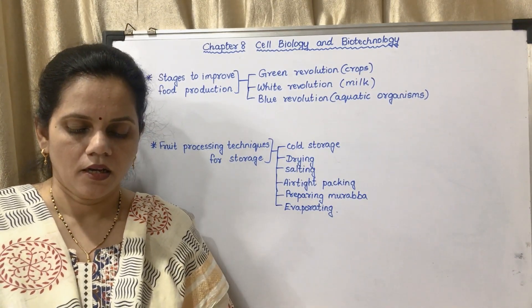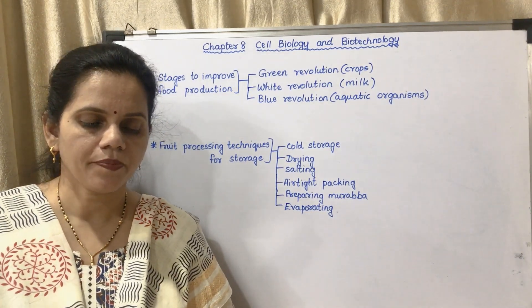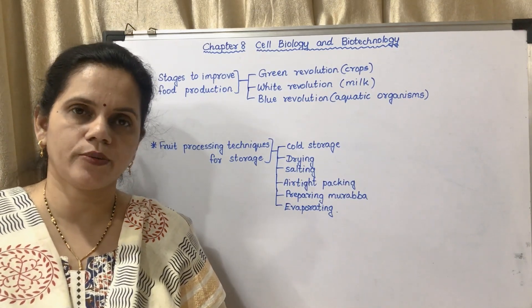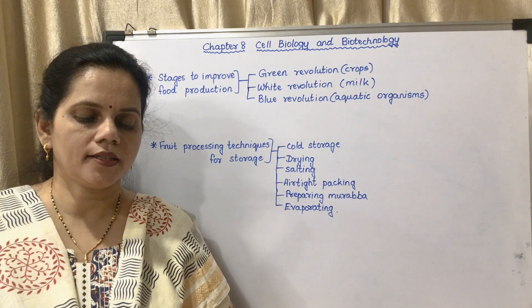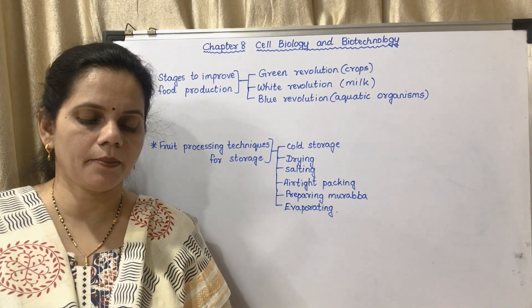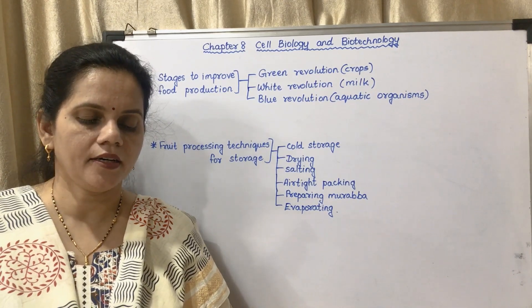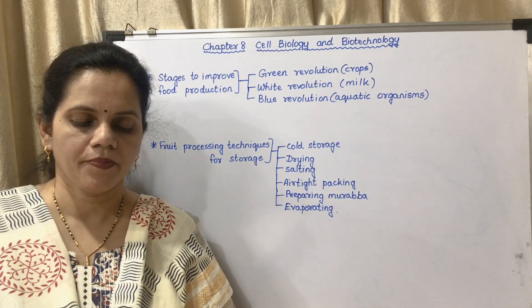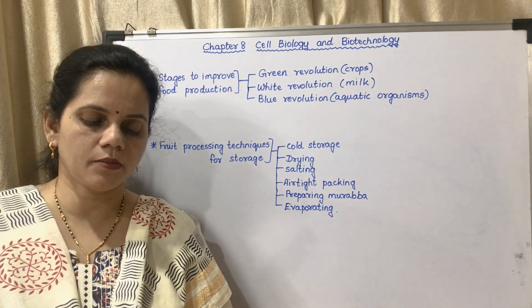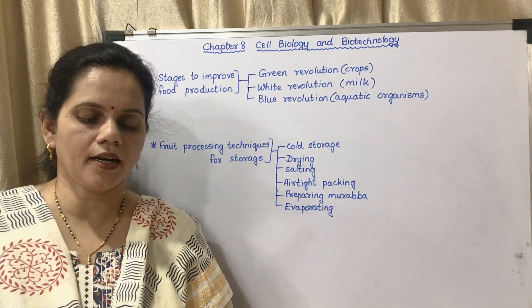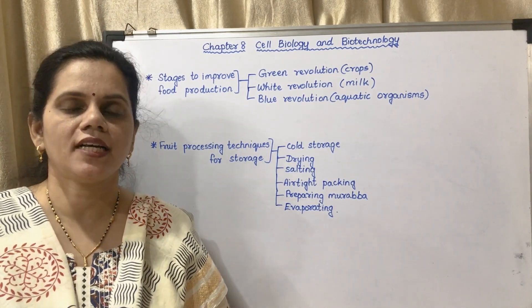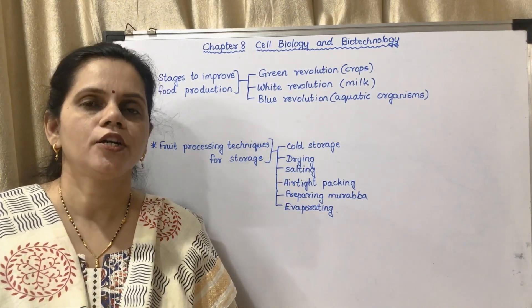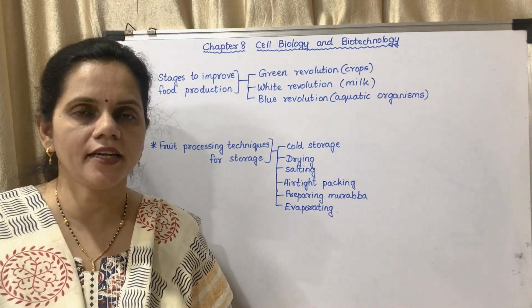Page number 96 — Green Revolution. Problems of population explosion started to appear at the beginning of the 20th century. Almost all countries, especially underdeveloped and developing countries, were badly affected by poor quality and quantity of food. Various methods applied for harvesting maximum yield from minimum land are collectively called the Green Revolution — less land but more yield.